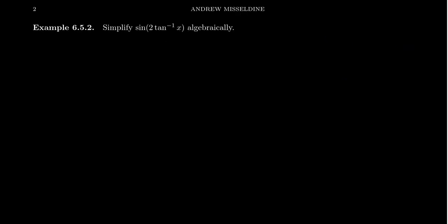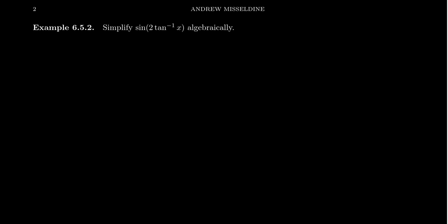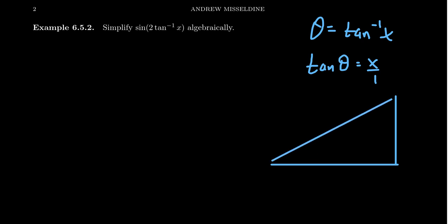Let's do another example before we end this video. Let's do sine of two times tangent inverse of x. Can we come up with an algebraic formula that doesn't involve trigonometry whatsoever? If this were just sine of tangent inverse of x, it would be similar to what we just did. But this is sine of two times tangent inverse of x, so the double angle identity has to come into play. Let's take theta to equal tangent inverse of x — think of it as an angle. This tells us tangent of theta equals x, or better yet, x over one. Drawing the associated right triangle, we mark theta, right angle, opposite x, adjacent one, and hypotenuse is the square root of one plus x squared by the Pythagorean equation.